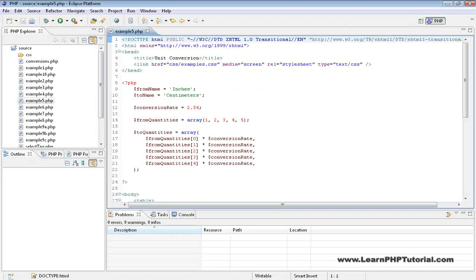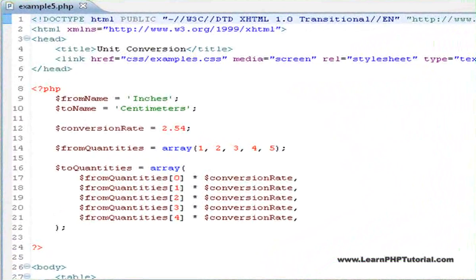Let's have another look at example 5, where we learned about arrays. In this example, we grouped five different conversions into an array, but we still had to explicitly initialize, calculate, and output each array element.